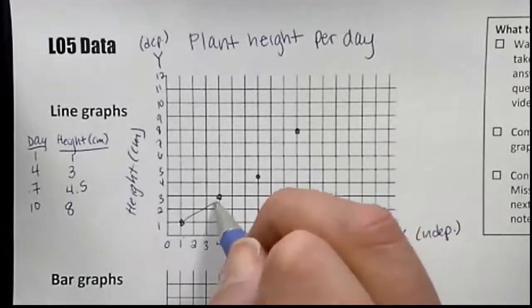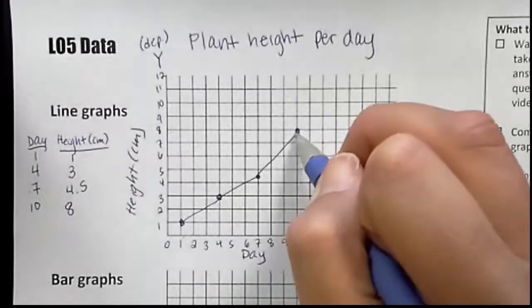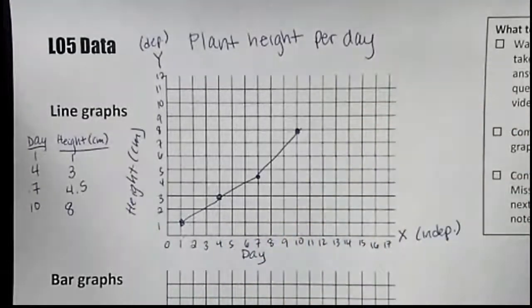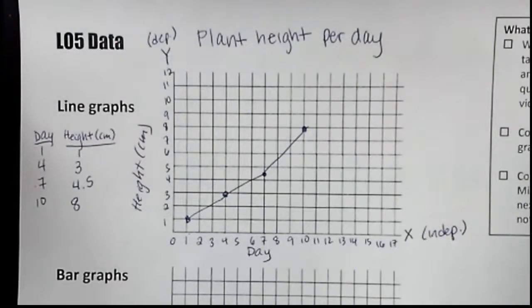As this is a line graph, you should connect your points like so. You could use a ruler, but that is basically how you make a line graph. You'll be doing some of that later on, especially when you conference with me.